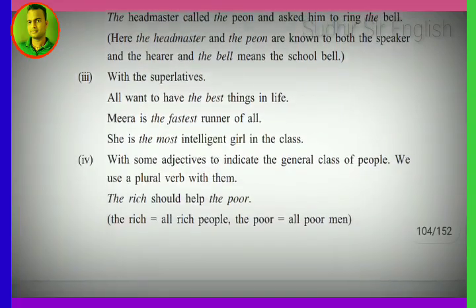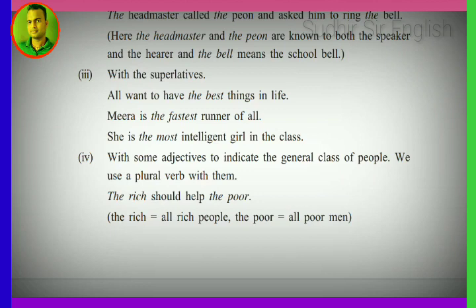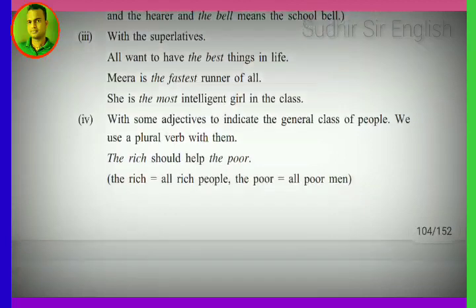Next: with the superlative degree. Adjectives have positive, comparative, and superlative degrees. We use 'the' before superlative degree. Examples: 'All want to have the best things in life' — 'best' is superlative of good, better, best. 'Meera is the fastest runner of all' — fastest is superlative of fast, faster, fastest. 'She is the most intelligent girl in the class' — most intelligent is superlative. With the superlative degree, 'the' is the correct article.